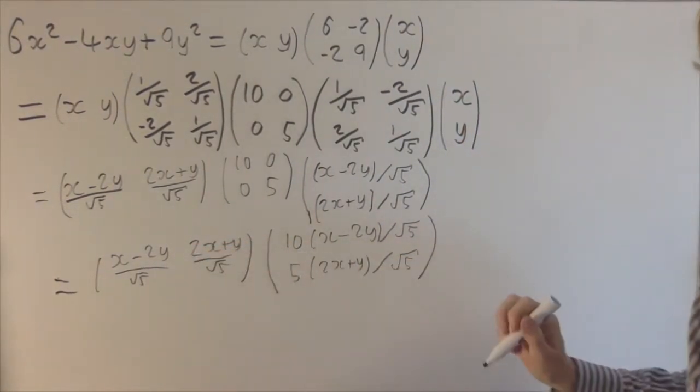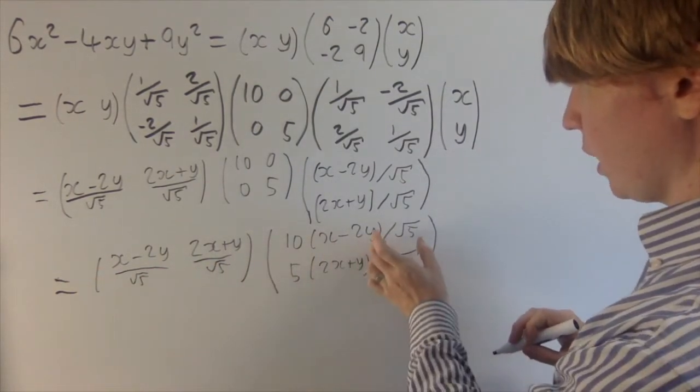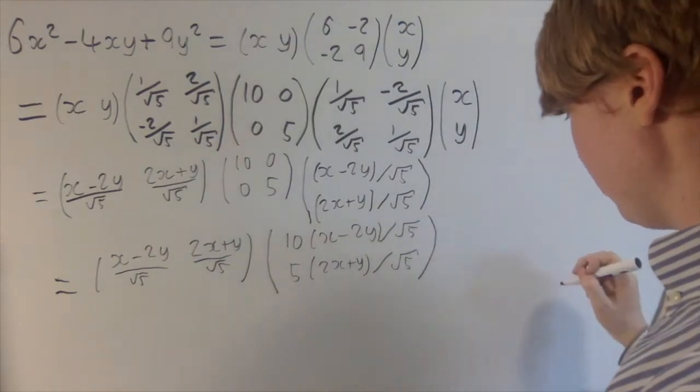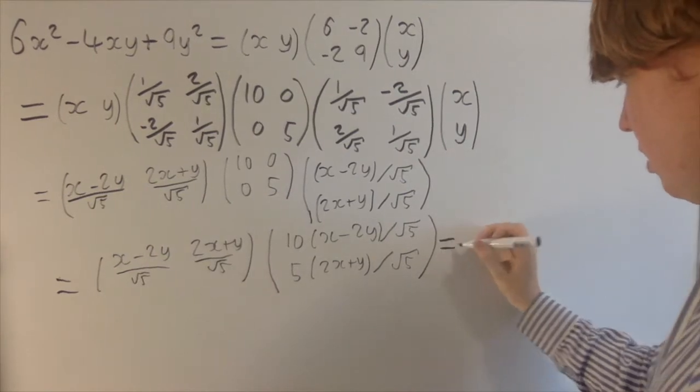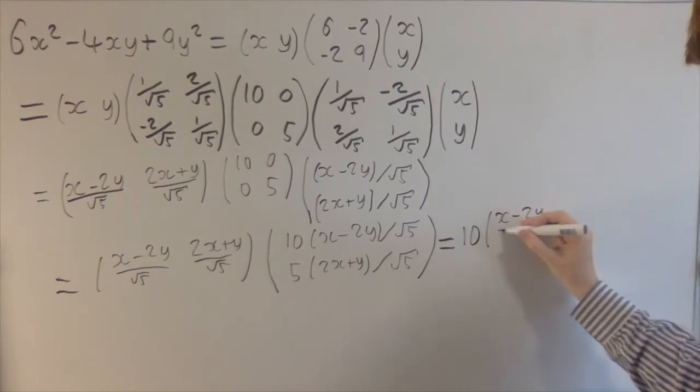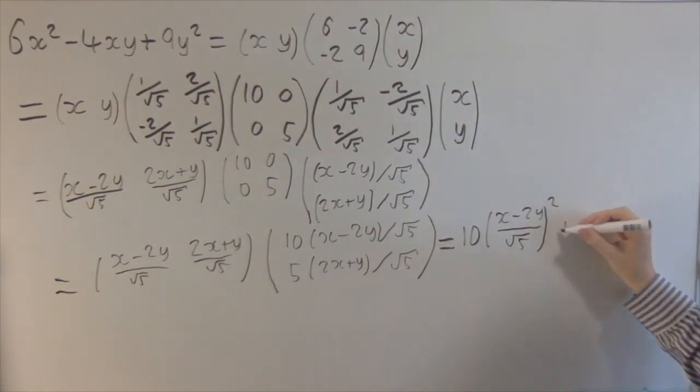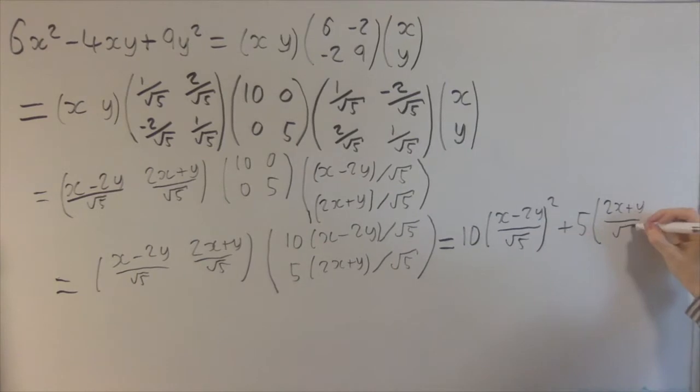Then we need to multiply these two together. So I hope you can see your x minus 2y over root 5 becomes squared now. So this is going to give us a really nice expression. So basically this is all equal to 10 times x minus 2y over root 5 all squared, plus 5 times 2x plus y over root 5 all squared.